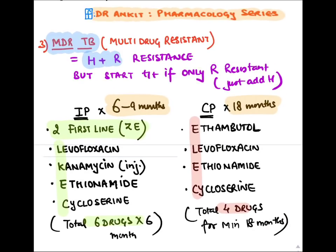For MDR-TB treatment: an initiation phase of 6 months (extendable to 9 months maximum), and a continuation phase of 18 months — minimum 24 months total. In the intensive phase, with H and R resistance, we continue with Z, E, levofloxacin, kanamycin, ethionamide, and cycloserine — 6 drugs for 6 months.